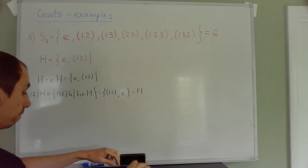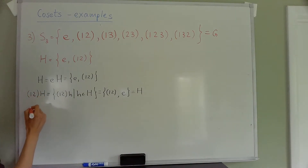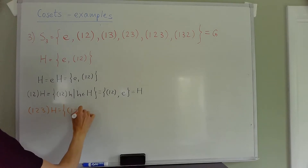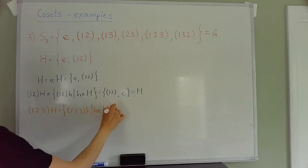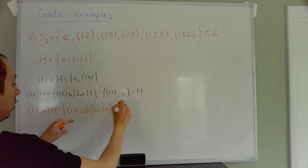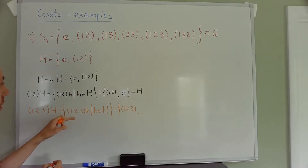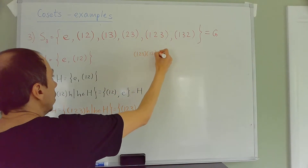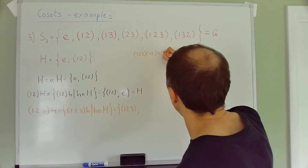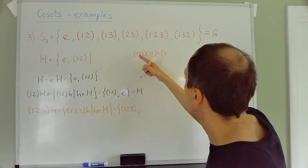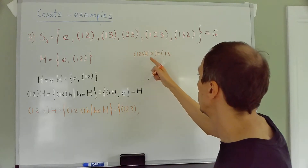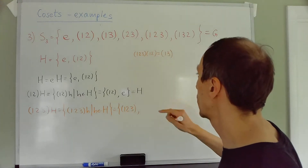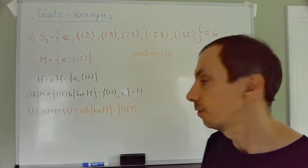Let's try g = (1 2 3). Then (1 2 3)H gives: (1 2 3)·e = (1 2 3). Now compute (1 2 3)·(1 2): 1 goes to 2, then 2 goes to 3, so 1→3. Then 3 goes to 1, closing the cycle, so 2 must be fixed. Check: 2 goes to 1, 1 goes to 2, so yes 2 is fixed. The result is the transposition (1 3).